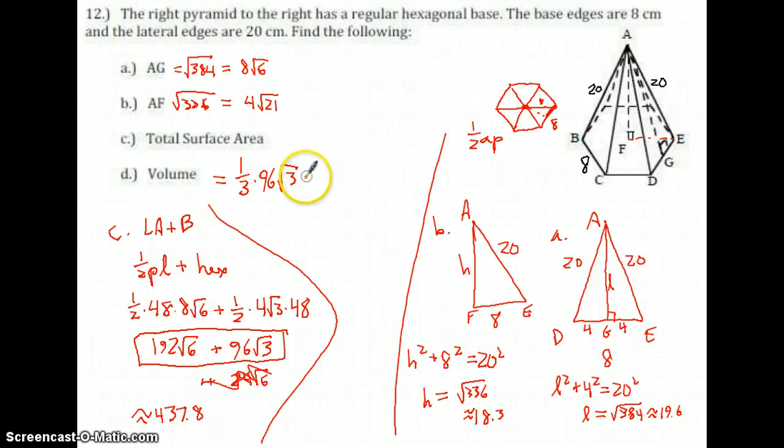Times the height, which I found out, A to F, that was good, that was the square root of 336. Actually, I'm not going to call it that, I'm going to call it 4 times the square root of 21.